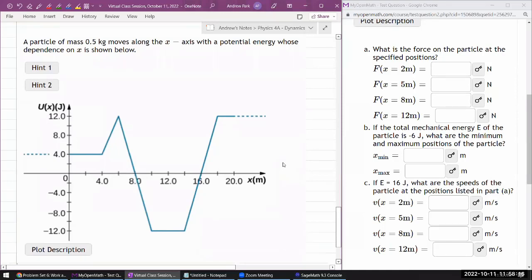So, this is the question. It says a particle of mass, some amount of mass, moves along the x-axis with, so they are giving us a plot of potential energy whose dependence on x is shown below. The question asks, what is the force on the particle at the specified positions, but they've given us a plot of potential energy.